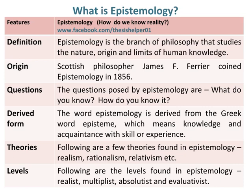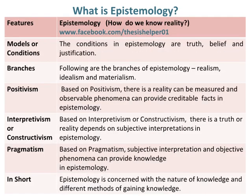The conditions in epistemology are truth, belief, and justification. Following are the branches of epistemology: realism, idealism, and materialism.